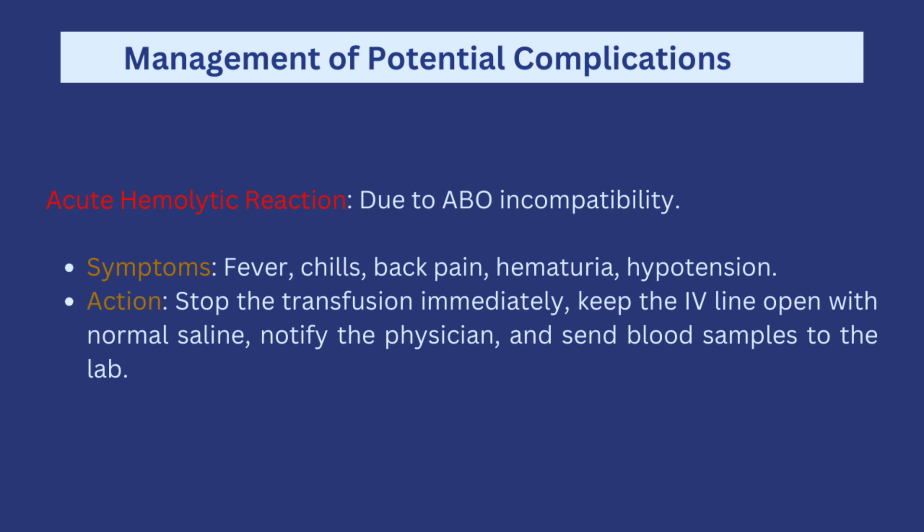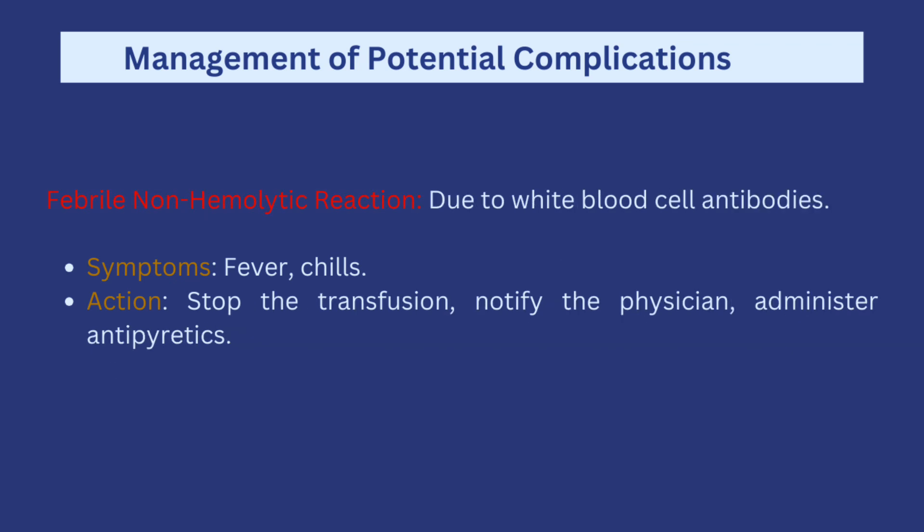The first complication is acute hemolytic reaction, which can occur due to ABO incompatibility. Symptoms include fever, chills, back pain, blood in urine, and hypertension. Actions to take include stopping the transfusion immediately, keeping the IV line open with normal saline, notifying the physician, and sending the blood back to the laboratory. You could also have a febrile non-hemolytic reaction, caused by white blood cell antibodies reacting against the new blood. Symptoms include fever and chills; stop the transfusion and notify the physician.